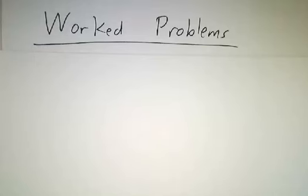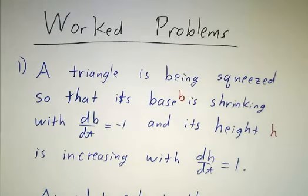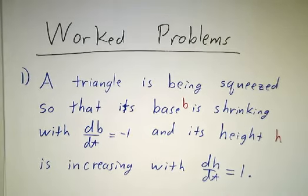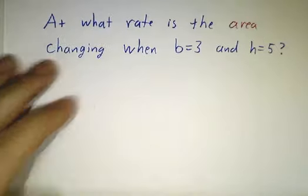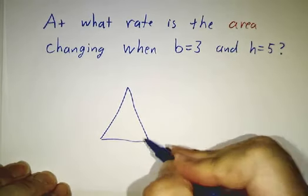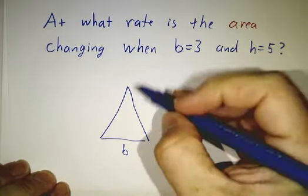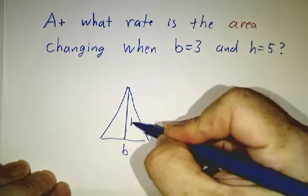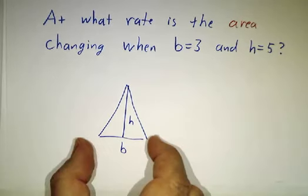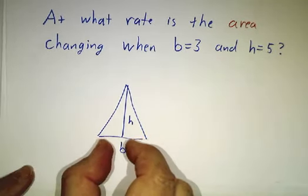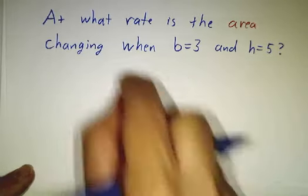In this video we're going to work a couple of problems related to the multivariable chain rule. The first problem involves a triangle. The triangle has a certain base b and height h, and it's being squeezed so that the base is shrinking and the height is increasing.